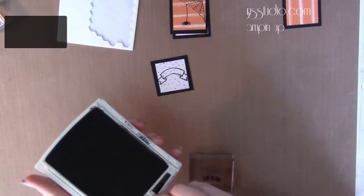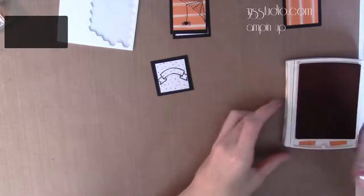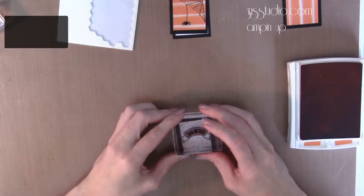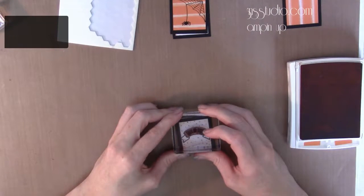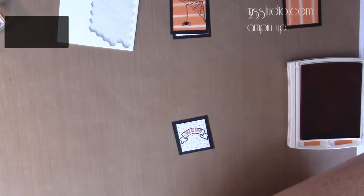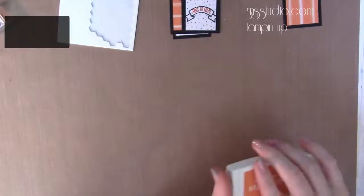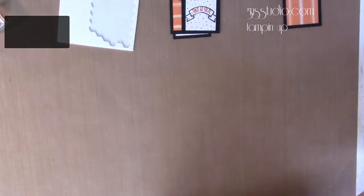All right, let's get out our Pumpkin Pie ink pad and our trick-or-treat sentiment from the Sweet Home stamp set. Going to ink that up, and we're going to stamp it on the banner. And there we have our trick-or-treat sentiment. There we go, so that's three squares down. I've only got one more to go.